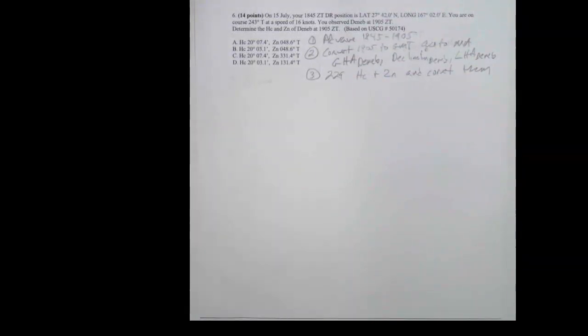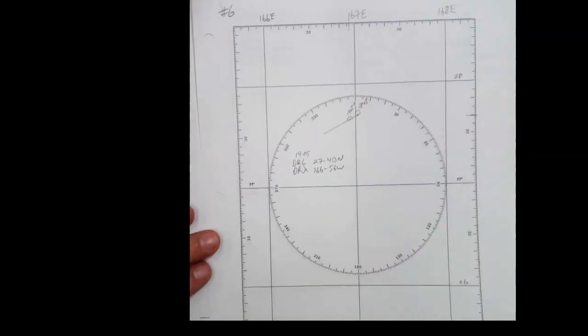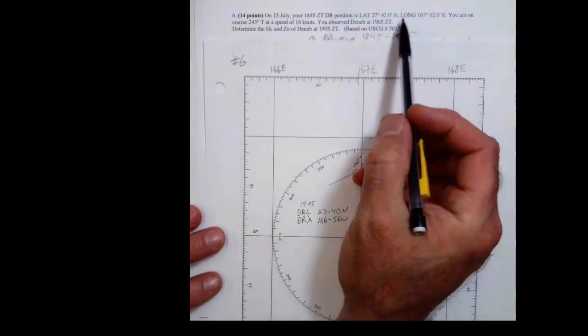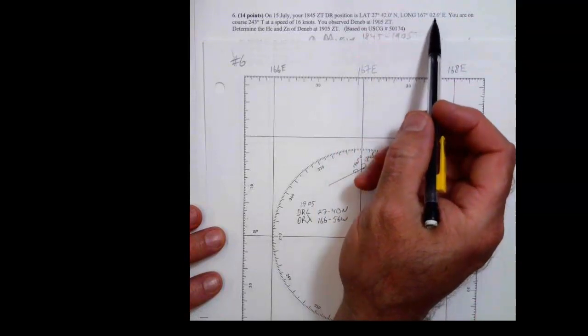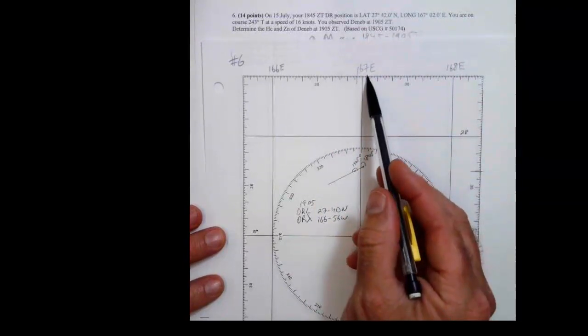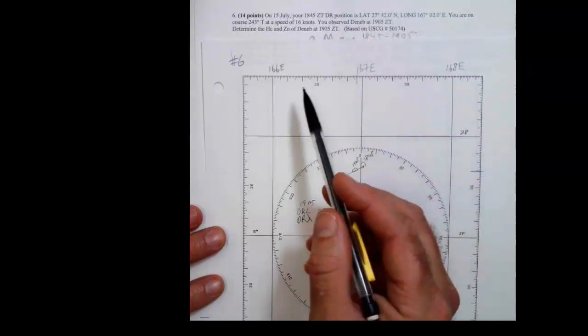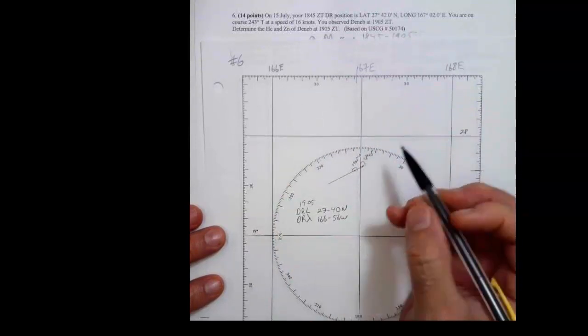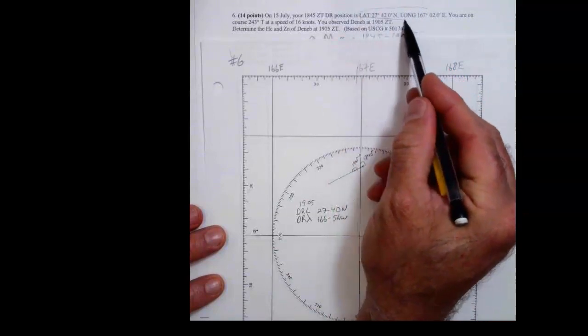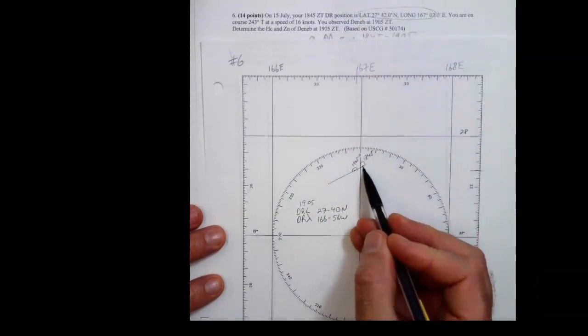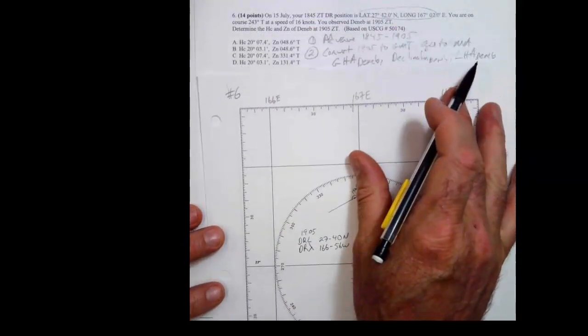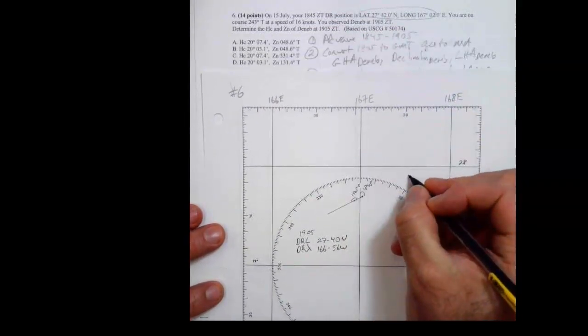I've already prepared the advance. So in this problem we start off at 27°42' by 167°. Here's 167 east, 168 east. Remember, we're in east longitudes, north latitude, so 27°28'. This position right here is right here. Then we're on a course of 243, so that's 243.